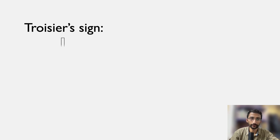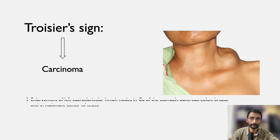Troisier's sign is seen in case of carcinoma. It involves enlargement of the left supraclavicular lymph nodes in carcinoma of the stomach, pancreas, colon, breast, and in malignant tumors of the testis.